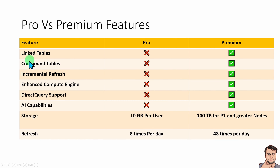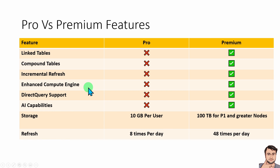The Linked table and Compound table functionality, which I explained in the 3rd episode of this series, is a Premium-only feature — you cannot use it with a Pro license. Incremental refresh is also an interesting feature available only with Premium. Enhanced Compute Engine is also a Premium-only feature, as is Direct Query support. AI capability is also Premium only.